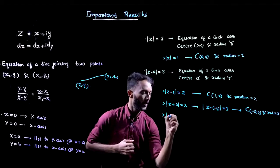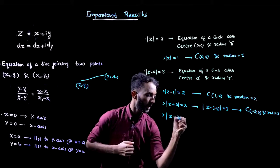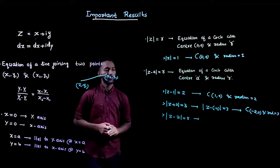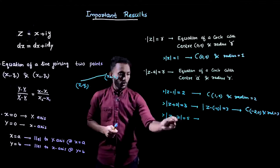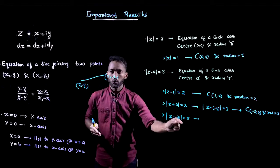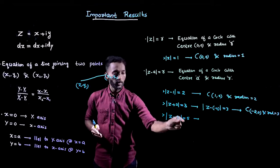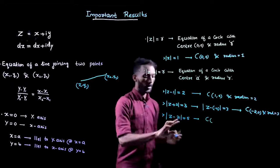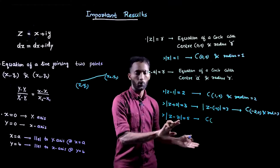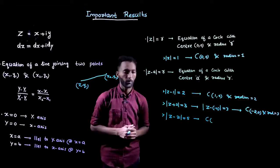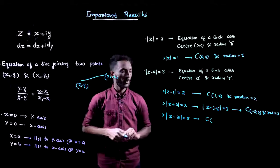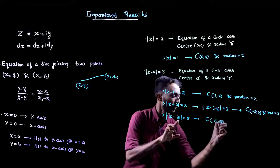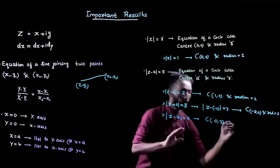Consider the equation |z minus 3i| = 5. This is an equation of a circle. To find the center: after the negative sign we have only the imaginary part 3i and no real part, so the real part is 0. Therefore the x-coordinate of the center is 0 and the y-coordinate is 3, giving center (0, 3) and radius 5.